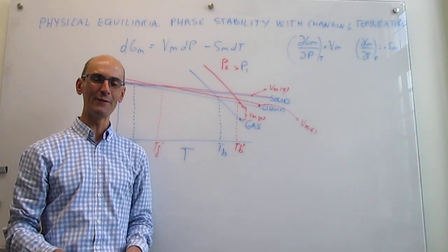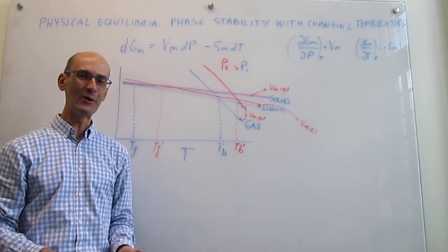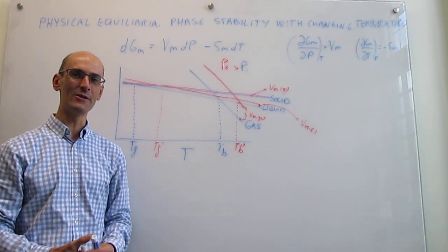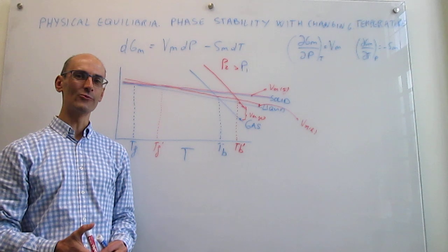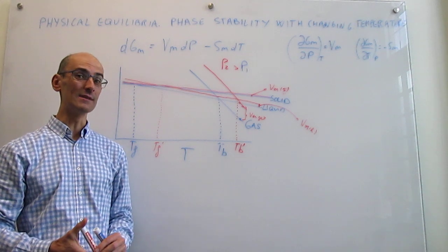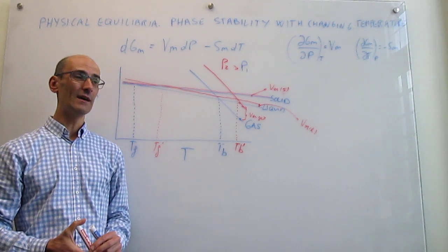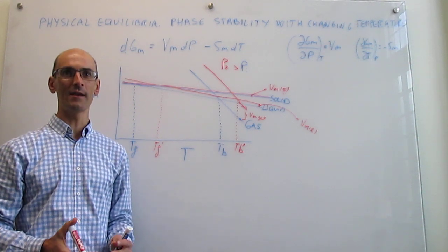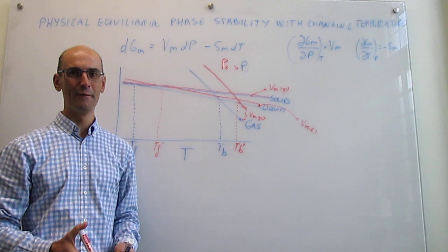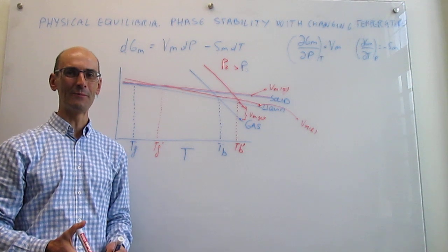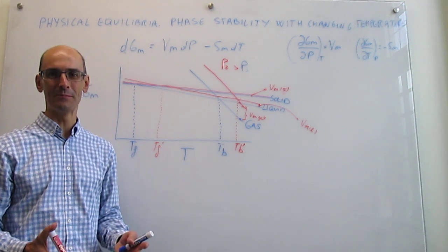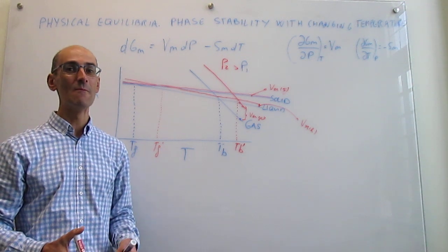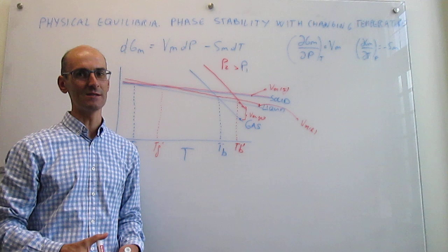In this video, we have learned a little bit more about how pressure and temperature can control phase stability. In particular, we have seen how you can alter freezing points and boiling points — points of equilibrium between phases — by changing the pressure.